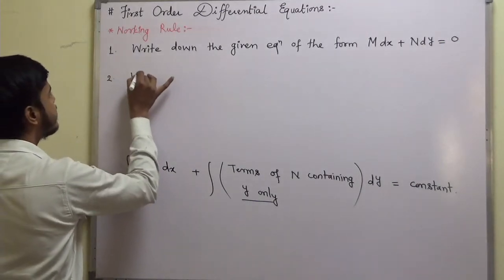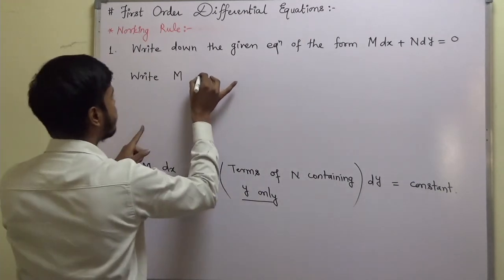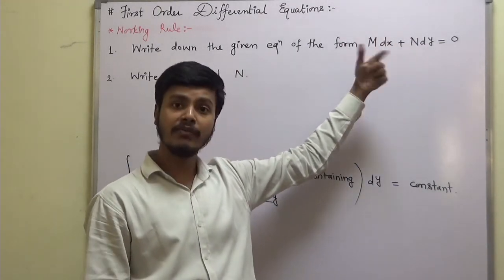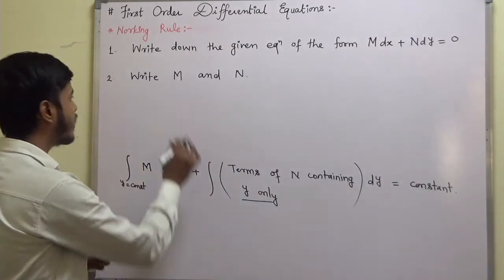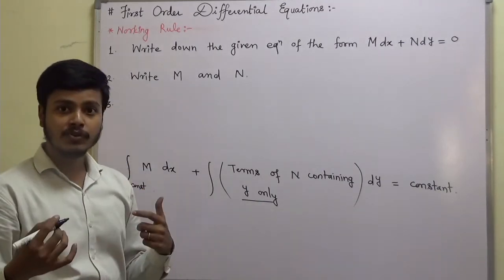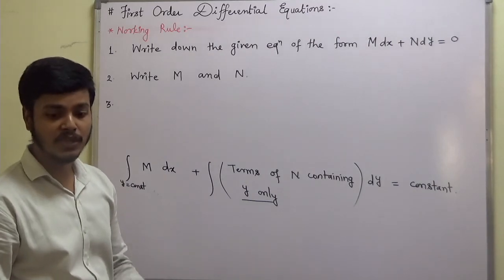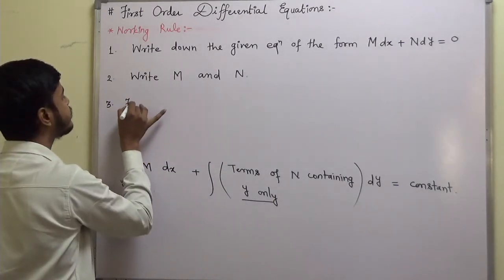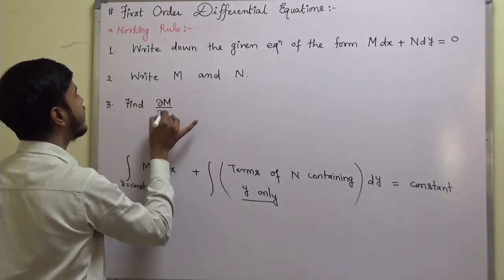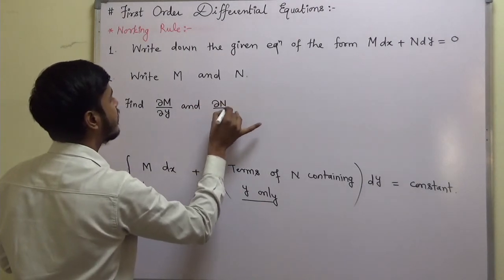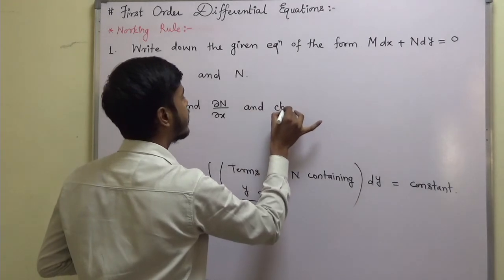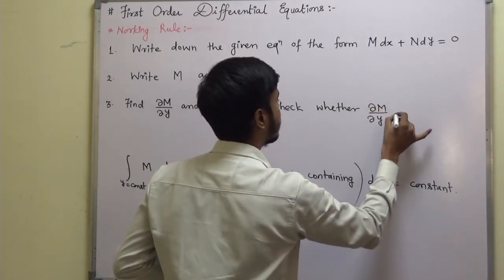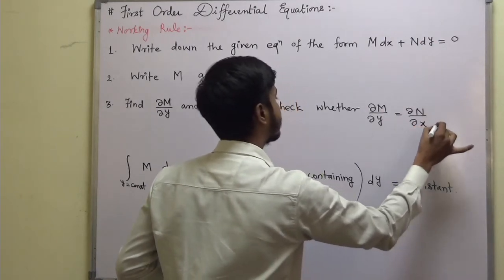The second step is to write down M and N. Sometimes you have to arrange the equation into the form M dx plus N dy equal to 0 first, and then identify M and N. The third step is to find del M by del y and del N by del x, and check whether del M by del y is the same as del N by del x.